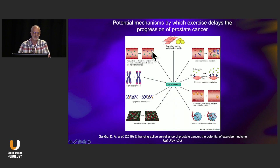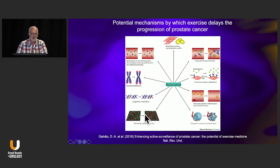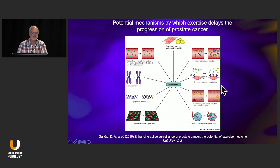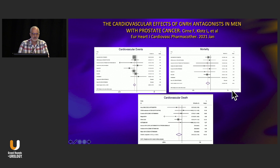On exercise: everyone here knows how important exercise is — if it were a pill we would all take it. There are eight different ways exercise has been demonstrated to improve the tumor microenvironment in prostate cancer, including cytokine alteration, epigenetic modulation, and alteration of hormone levels.